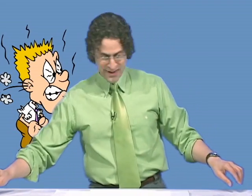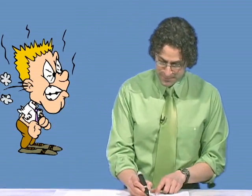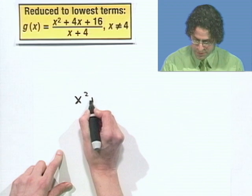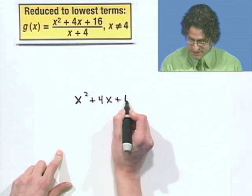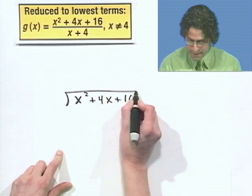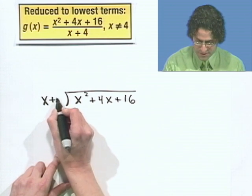So what do we do? Well, we long divide. So let's have some fun long dividing polynomials. By the way, I have to admit, you're going to probably hate me, but I do enjoy long dividing polynomials. It's just a little weird thing that I have. So let's actually take x squared plus 4x plus 16 and divide it by x plus 4.